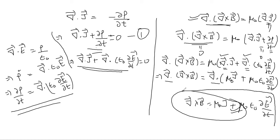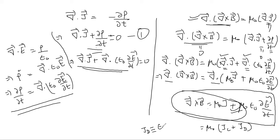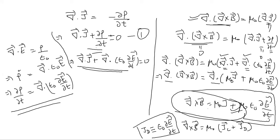This is Maxwell's fourth equation in differential form: del cross B equals mu naught J plus mu naught epsilon naught times partial E by partial t. You may have read it in the form mu naught times the quantity Jc plus Jd, where Jc is the conduction current and Jd is called the displacement current, equal to epsilon naught times partial E by partial t. The second term here was Maxwell's addition — again, totally on theoretical grounds with no experimental evidence.